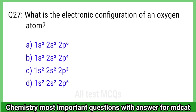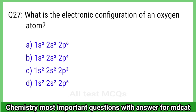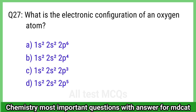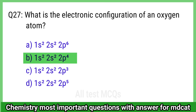Question 27: What is the electronic configuration of an oxygen atom? The right answer is option B, 1s2, 2s2, 2p4.